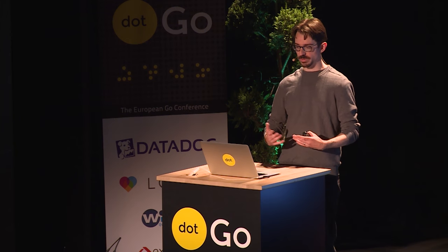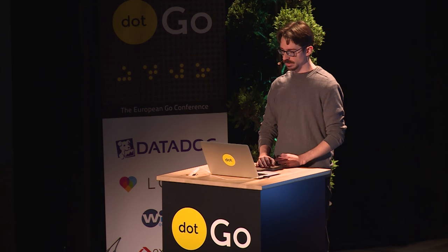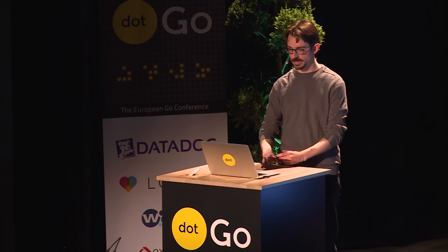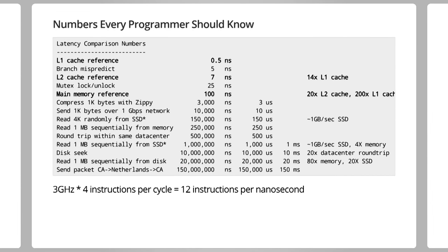In order to compensate for this huge speed difference, processors have multiple levels of caching. This is a slide made famous by Jeff Dean. The original numbers were from 2003, but they have been updated more or less since then. I've highlighted the three timings for the cache references here: 0.5 nanoseconds for an L1 cache reference, 7 nanoseconds for an L2 cache reference, and 100 nanoseconds for a main memory reference.